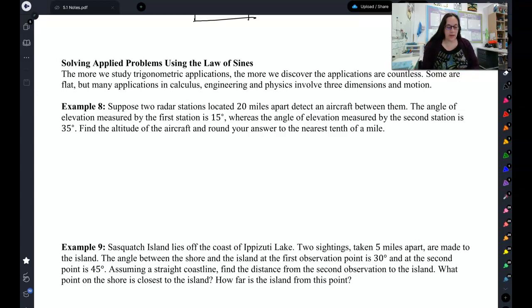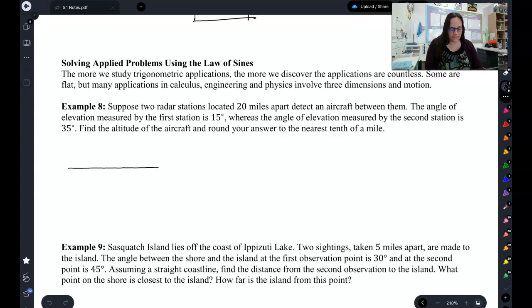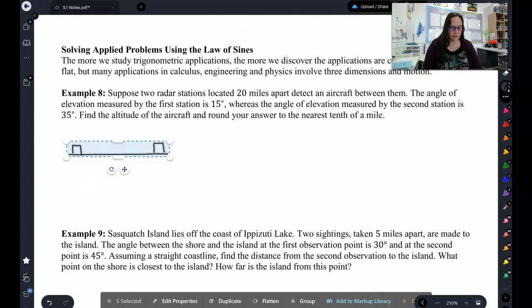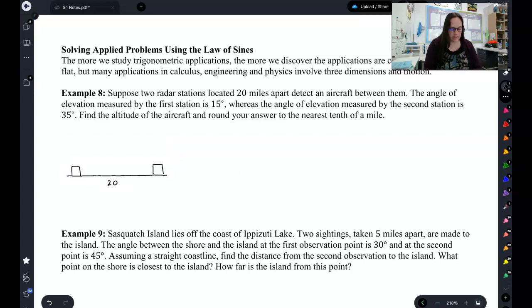In example 8 we have two radar stations that are located 20 miles apart and they detect an aircraft between them. Let's draw this. We have two radar stations. Here's one, here's two. They are 20 miles apart. So this is 20 miles and they detect some sort of airplane between them.